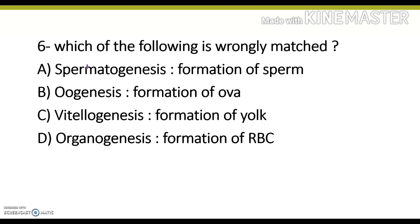Which of the following is wrongly matched? Spermatogenesis: formation of sperm. Oogenesis: formation of ova. Vitellogenesis: formation of yolk. Organogenesis: formation of RBC. The answer is option D, because the formation of RBC is known as erythropoiesis. Organogenesis means the formation or development of organs of any animal or plant. All the other three options are correct.